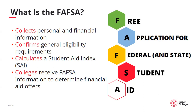Upon submission of the FAFSA, a Student Aid Index, or SAI, is calculated. The SAI is a result of the formula the federal government uses to determine a family's eligibility to pay. The SAI will remain the same at all schools and will be used to determine how much need-based versus non-need-based aid will be offered. While many people think need-based aid is just the Pell Grant, the amount of need-based aid a person could qualify for varies based on the school's cost of attendance. Other forms of need-based aid include some state grants, work study, and subsidized student loans.